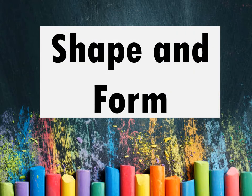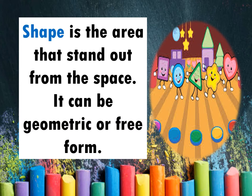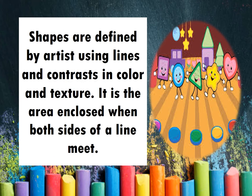Next, we have shape and form. Shape is the area that stands out from the space. It can be geometric or freeform. When we say geometric, it has a definite shape, just like circle, triangle, rectangle, star, and heart. Freeform shapes have indefinite shapes, just like the waves of the oceans and the shape of the clouds. Shapes are defined by artists using lines and contrast in color and texture.